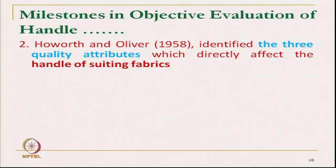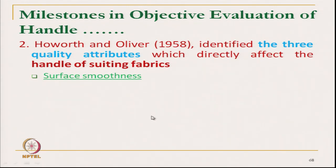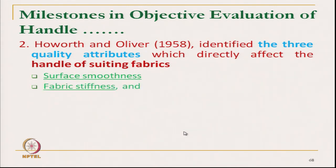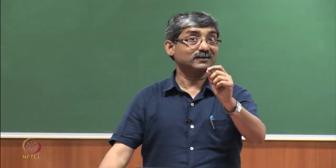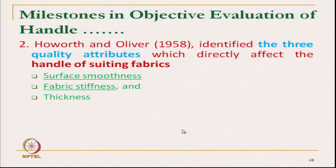Peirce proposed that if we measure bending stiffness, compressional characteristics, specific volume, or surface characteristics, these will give us tactile responses. Then in 1958, Howarth and Oliver identified three attributes for suiting fabric: surface smoothness, fabric stiffness, and thickness. These are all measurable, and if we can measure these characteristics objectively, we can predict the tactile response.